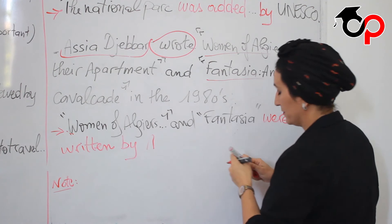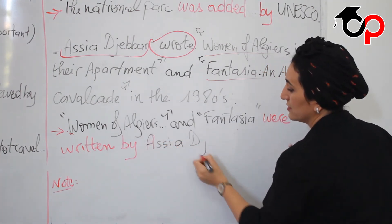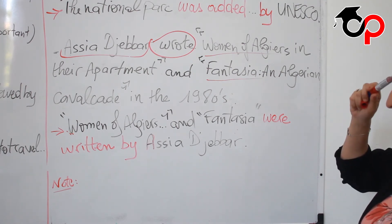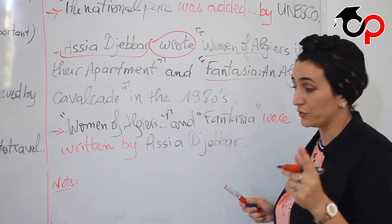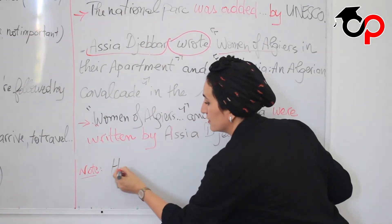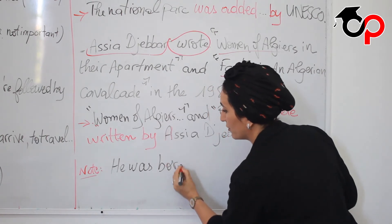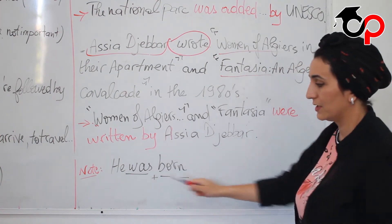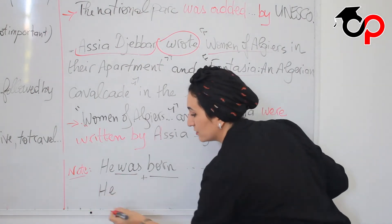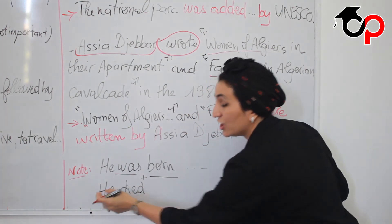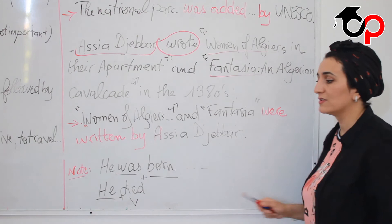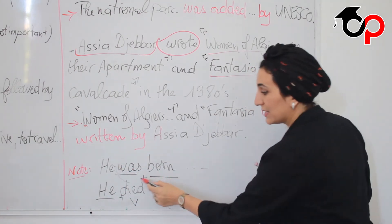I have just a note to keep in mind. When you talk about someone's birth, you have to use the passive. For example: 'He was born' — 'to be' plus past participle. And when you talk about someone's death, use the active form: 'He or she died.' Never say 'he was died' — no. Use the active voice: 'He died' — subject plus verb.